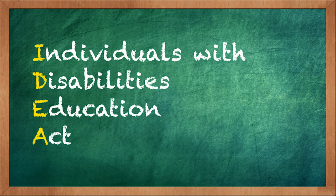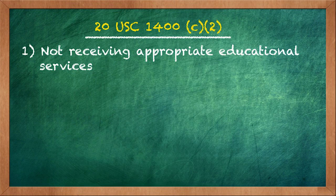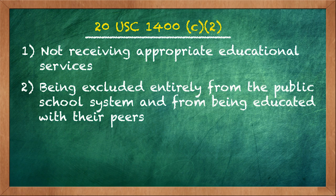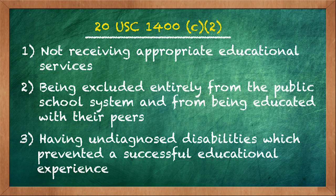Indeed, when the Individuals with Disabilities Education Act, or IDEA, was passed into law, the law specifically gave several reasons why it was created. Stating that for too long children with disabilities faced many difficulties, the law was created to right several wrongs. The law gave the following big picture issues, which included students: one, not receiving appropriate educational services; two, being excluded entirely from the public school system and from being educated with their peers; and three, having undiagnosed disabilities, which prevented a successful educational experience.